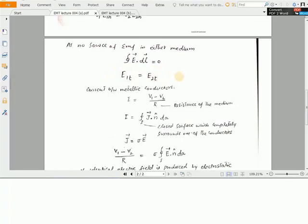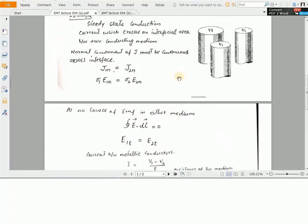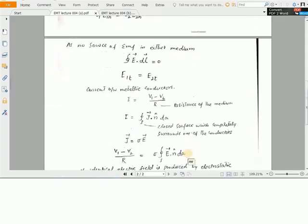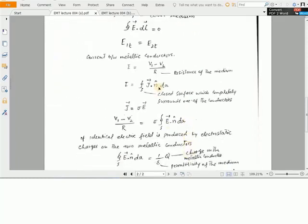Now if we want to find out the current flow between the two conductors of potential V1 and V2, current is expressed as I equals the difference of potential on the conductor divided by R, the resistance of the medium. Current can be expressed in the form of current density as closed integral over S of J dot N into dA.